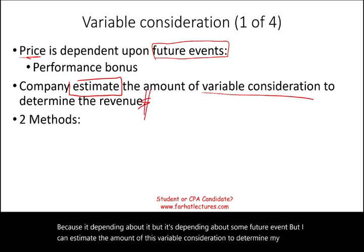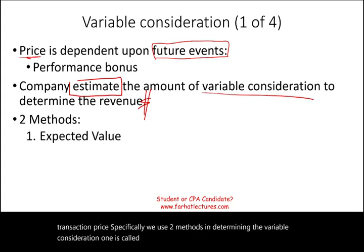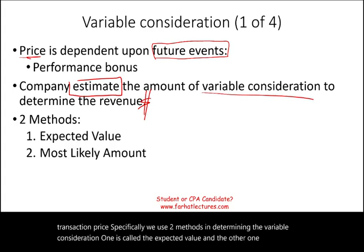We use two methods in determining the variable consideration: one is called the expected value method, and the other one is called the most likely method.